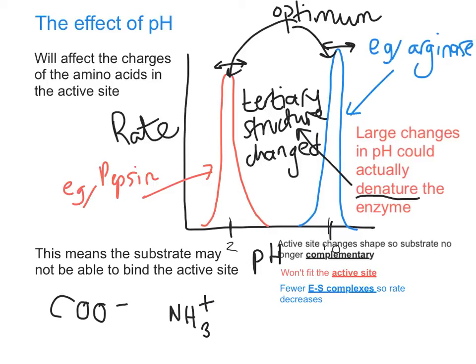Under normal circumstances in cells, we don't tend to see big fluctuations in pH. Enzymes can be denatured by large pH changes, and there are examples in the human body mainly around digestion — amylase in the mouth passes into the stomach where the pH becomes massively acidic, denaturing that enzyme. For this reason, the small intestine makes its own amylase so that carbohydrate digestion can continue, breaking starch into maltose. The body has a buffering system which mops up excess hydrogen ions to prevent damaging pH fluctuations.